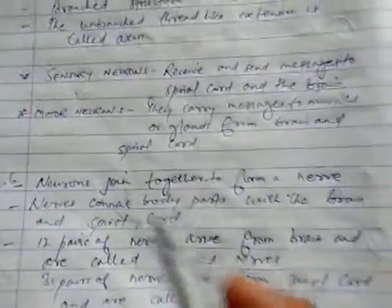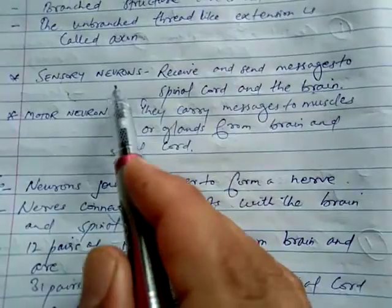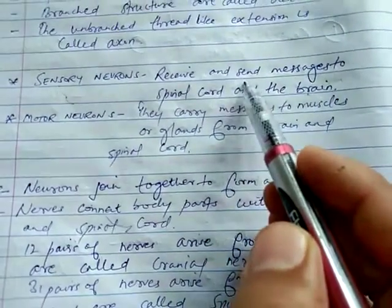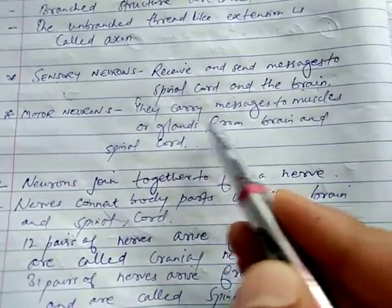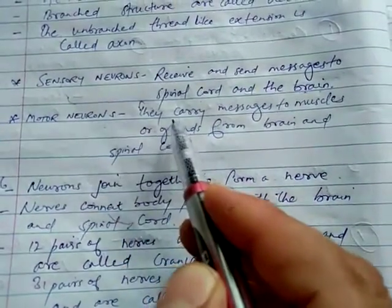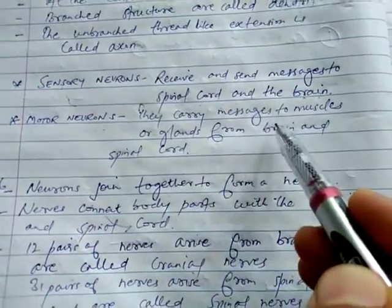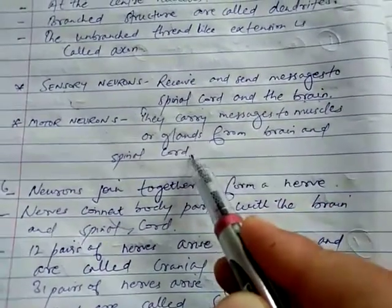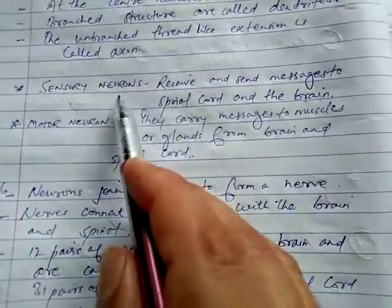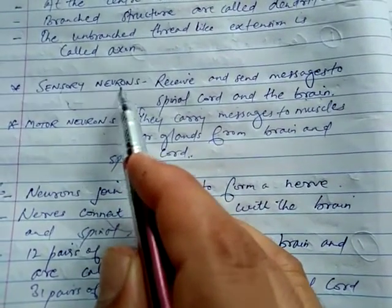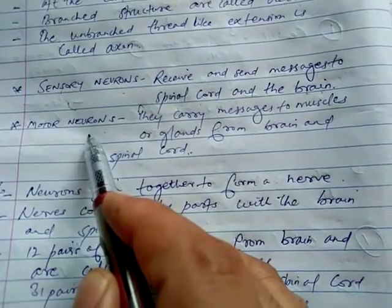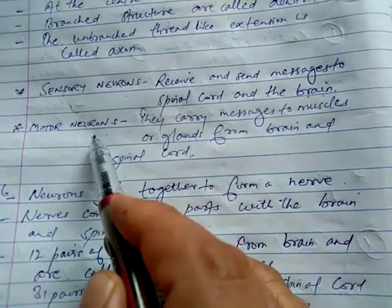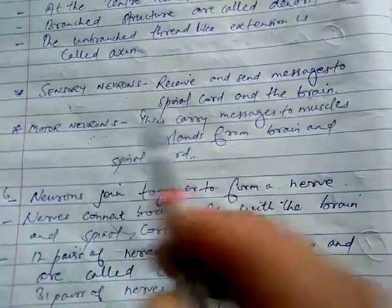Sensory neurons and motor neurons are two types. Sensory neurons receive and send messages to the spinal cord and the brain. Motor neurons carry messages from the brain and spinal cord to muscles or glands. Their role is to receive and send messages to the spinal cord and brain, and to bring back messages from the spinal cord or brain to different body parts.